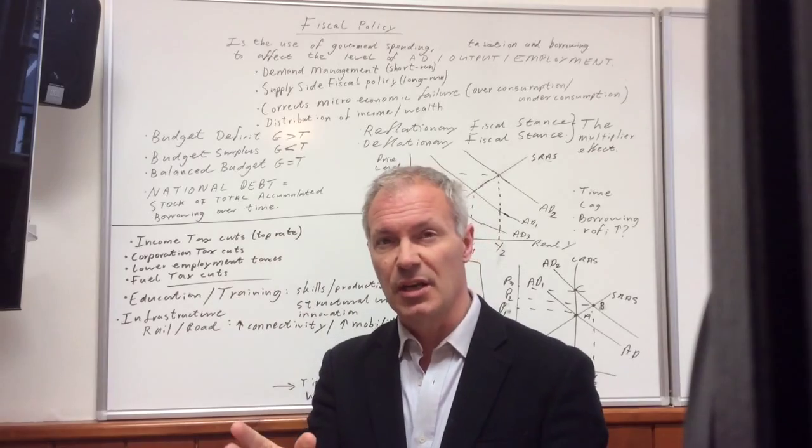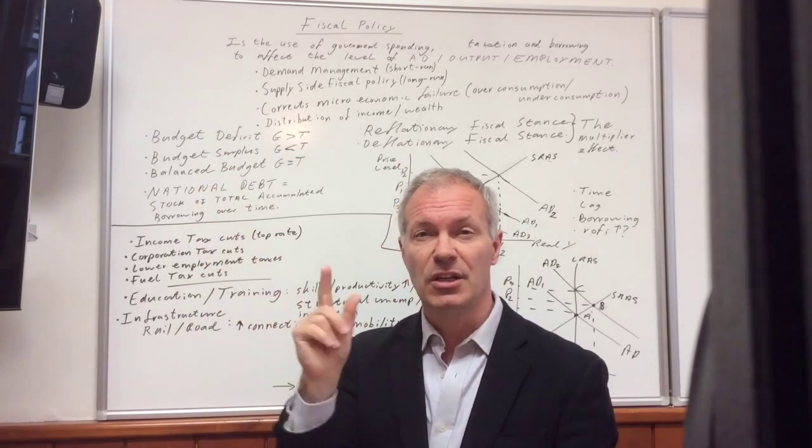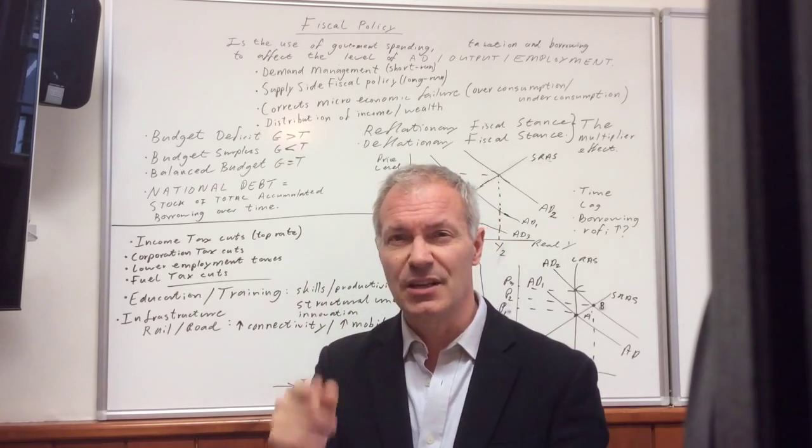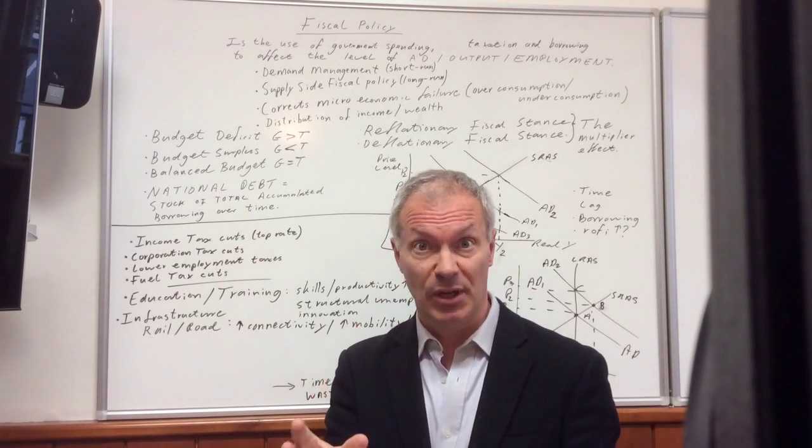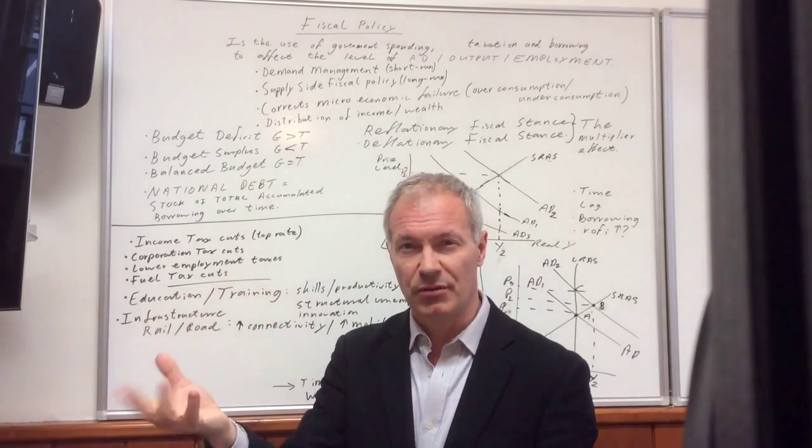Imagine in year one, we had a budget deficit of minus 10 billion. In year two, minus 15 billion. At the end of year two, we're going to have a national debt of 25 billion. In total, that's what the government owes to bondholders.